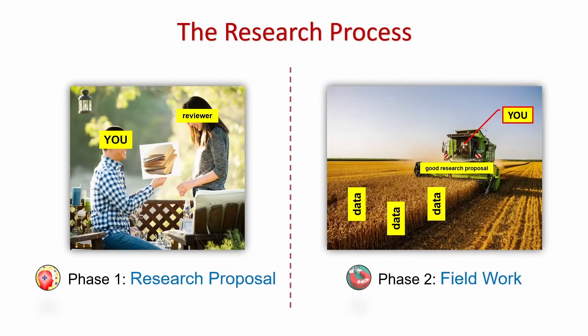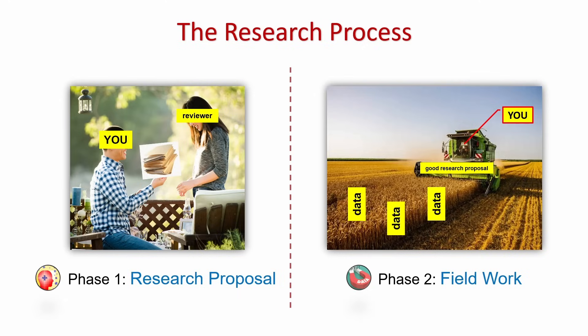The research process is divided into two distinct phases: the research proposal phase, and the fieldwork — or actually doing the research — phase. The first phase is the conceptualization phase, wherein you formulate the battle plan of the research and write it up neatly into a research proposal, ready to be approved by technical and ethics reviewers. The second phase is the action phase, wherein you go out into the real world, harvest your data, analyze them, and make use of your results.